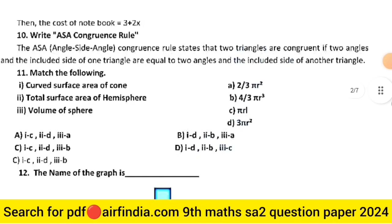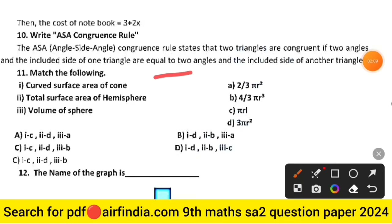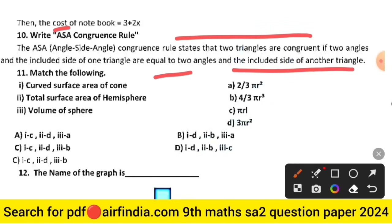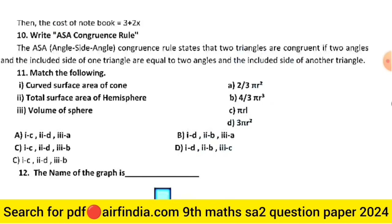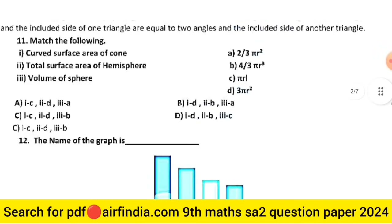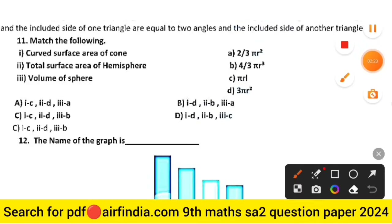Question 10: write a congruence rule — the full form of ASA is Angle-Side-Angle. These are your congruence rules.